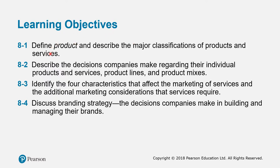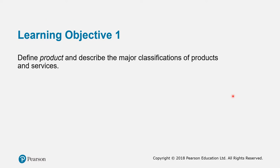These are the four learning objectives. First, to define products and describe the major classifications of products and services. Second, to describe the decisions companies need to make regarding their individual products and services, including product lines and product mixes. Third, to identify four characteristics that affect the marketing of services and additional marketing considerations. Lastly, to discuss some of the branding strategy.